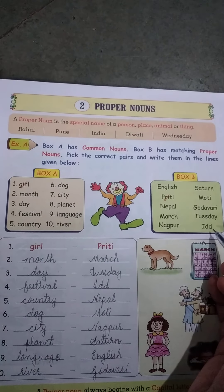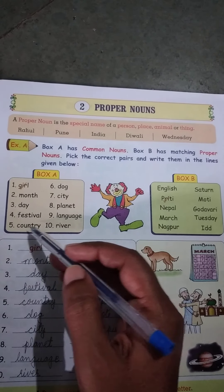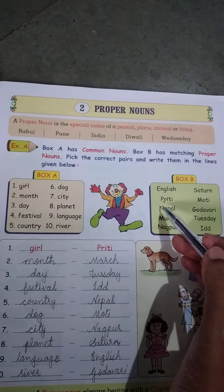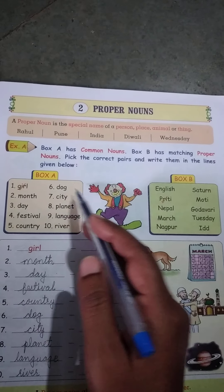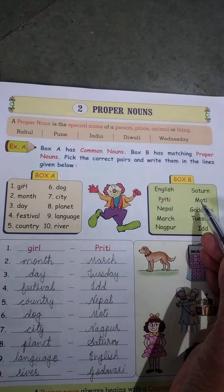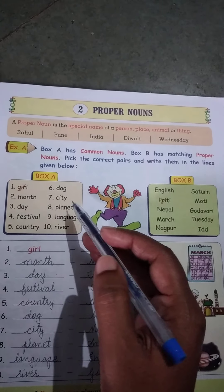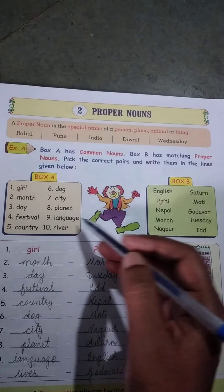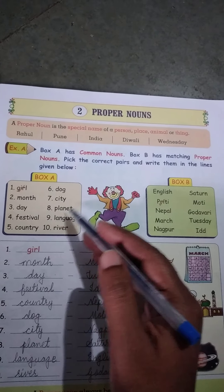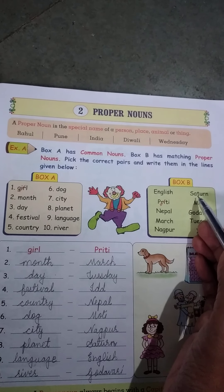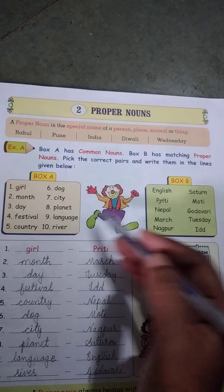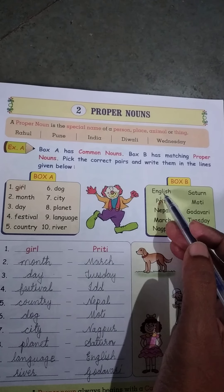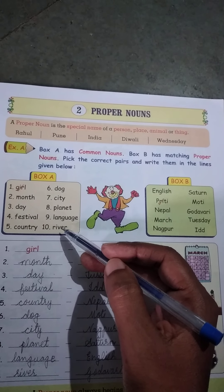Let us again say what is the proper name. A proper name is the special name of a person, place, animal, or thing. Here the examples given are: name of a person — Rahul; name of a place — Pune; name of a place — India; name of a festival — Diwali; or name of a day — Wednesday. These are the proper names.